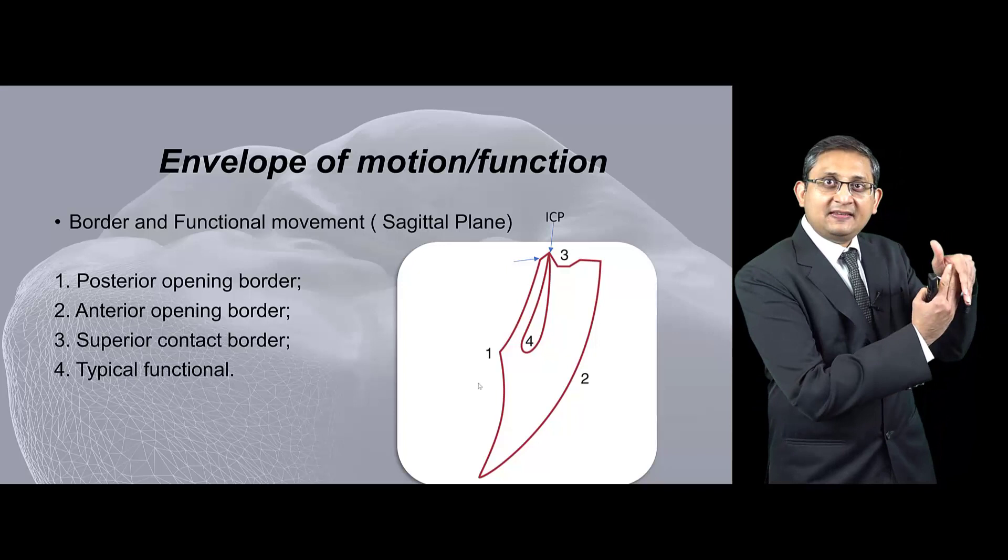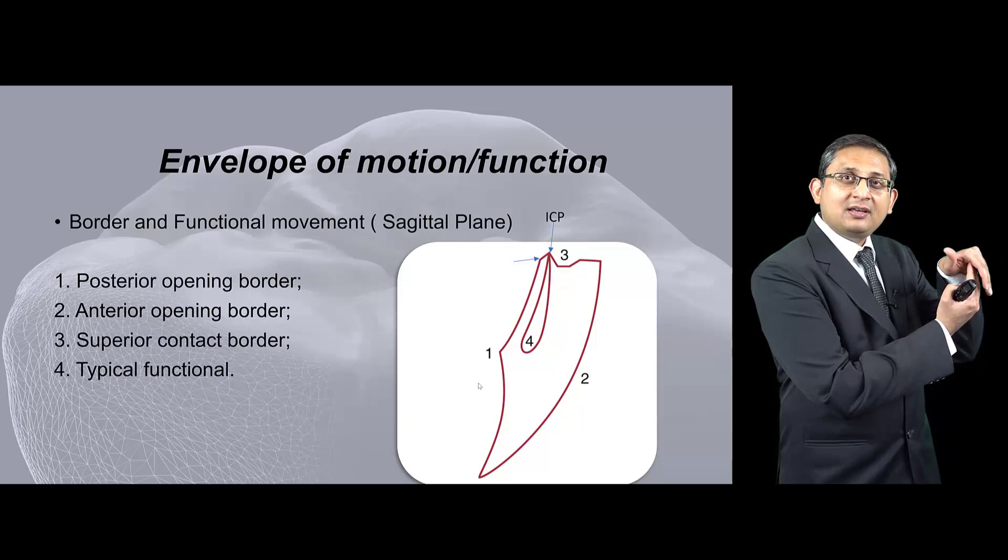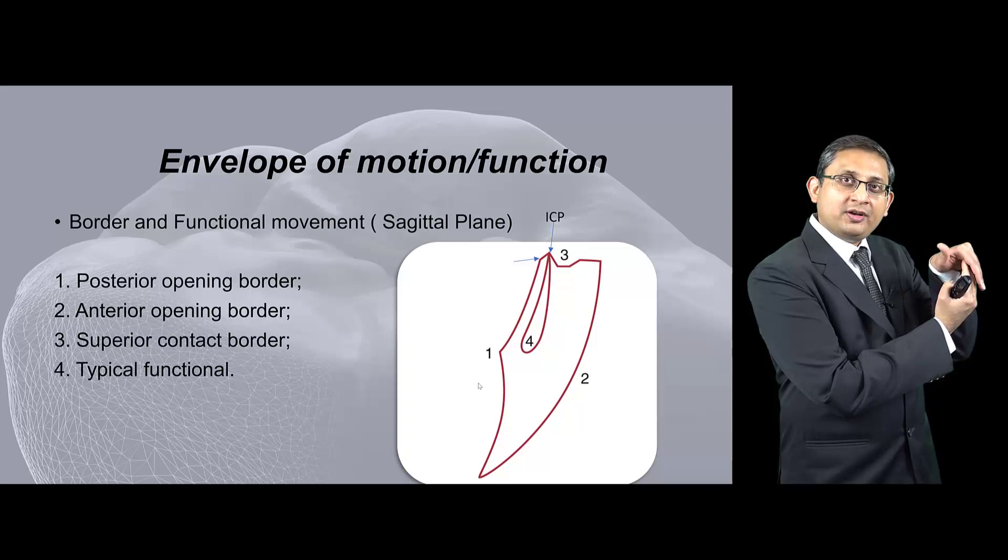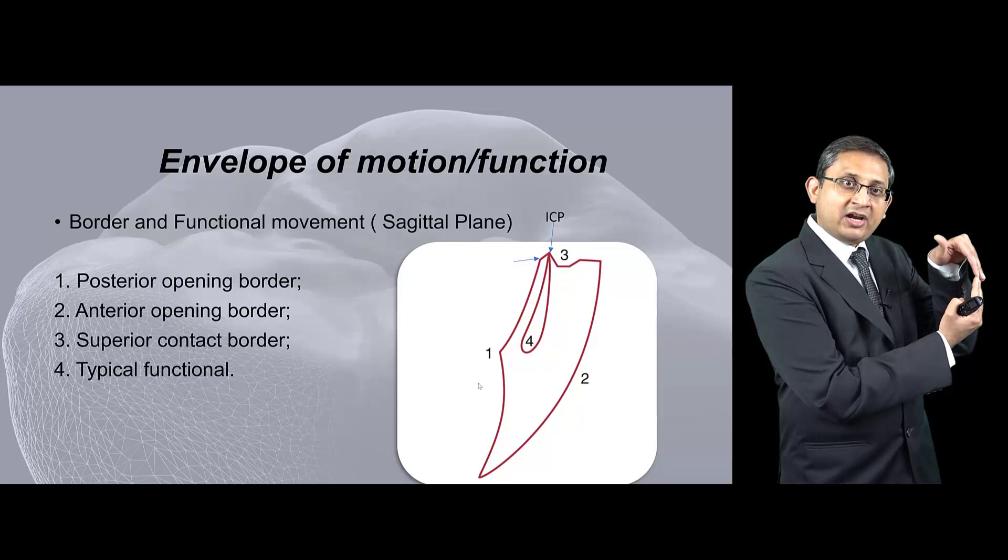If you close your teeth and you are in ICP position, that's where you are in the diagram. Now if you move your jaw forward in protrusive movement, your jaw will go downwards and you can see in the diagram that downward line, and now you're at the edge to edge position where the next corner is.